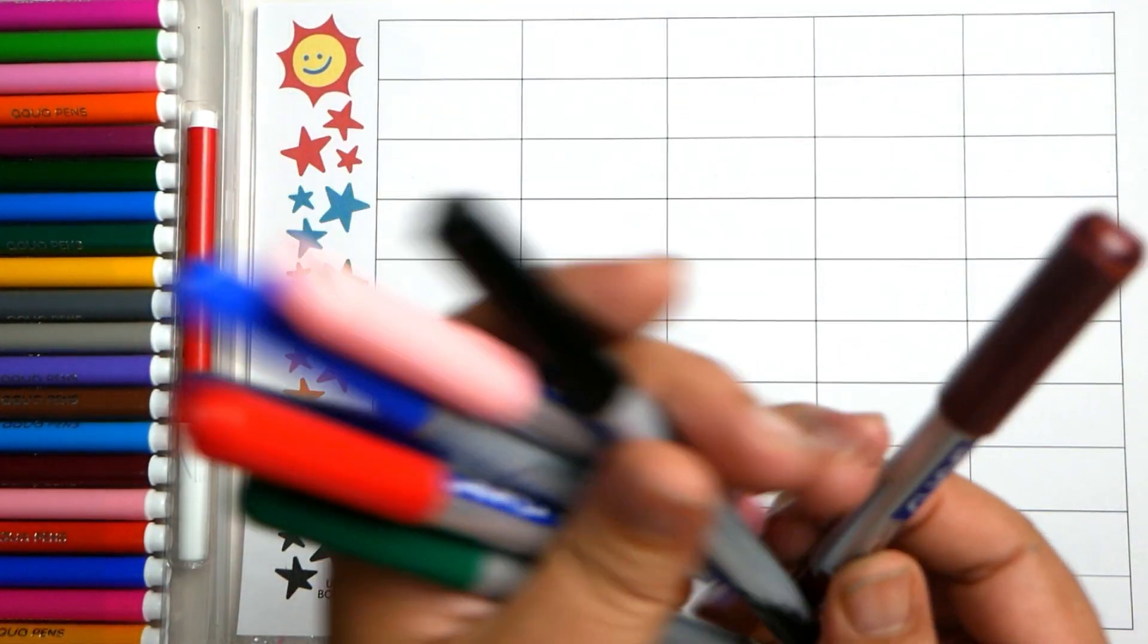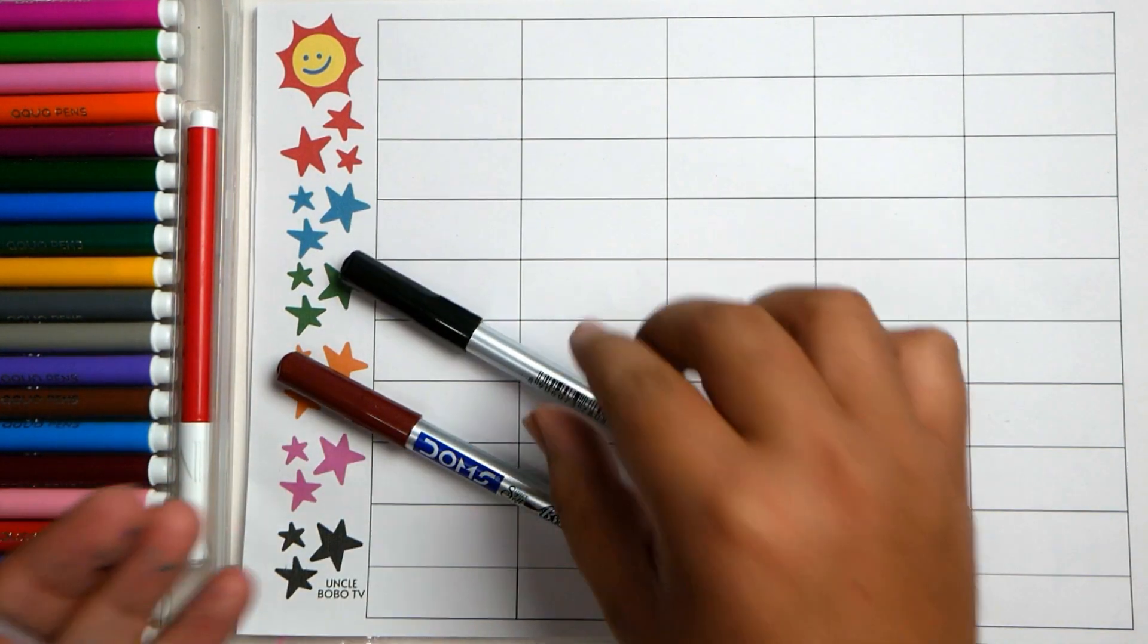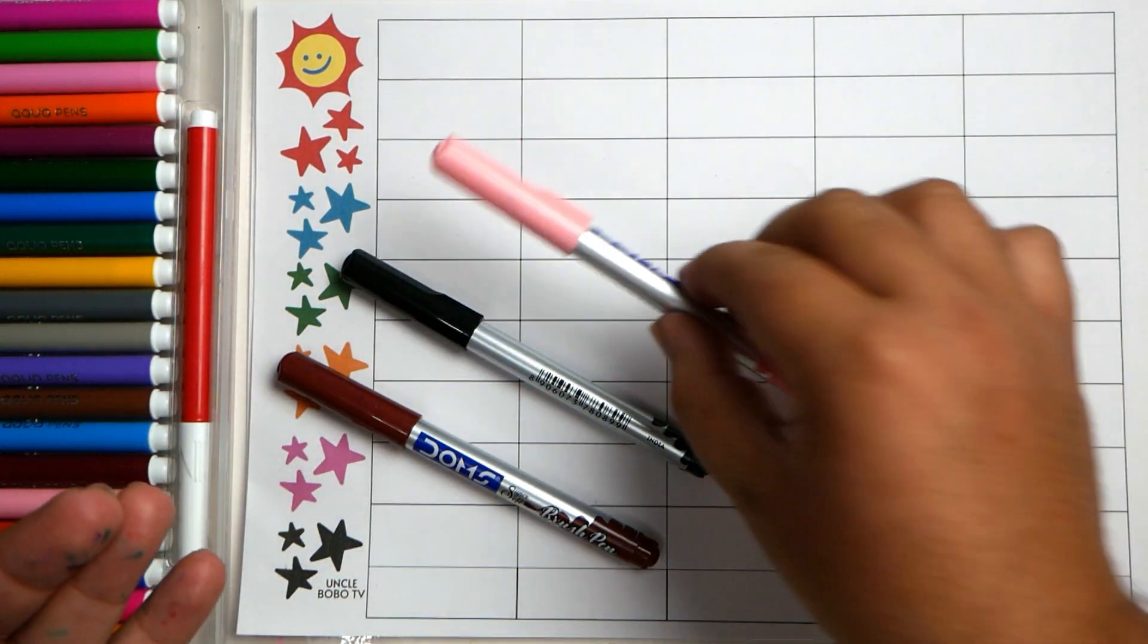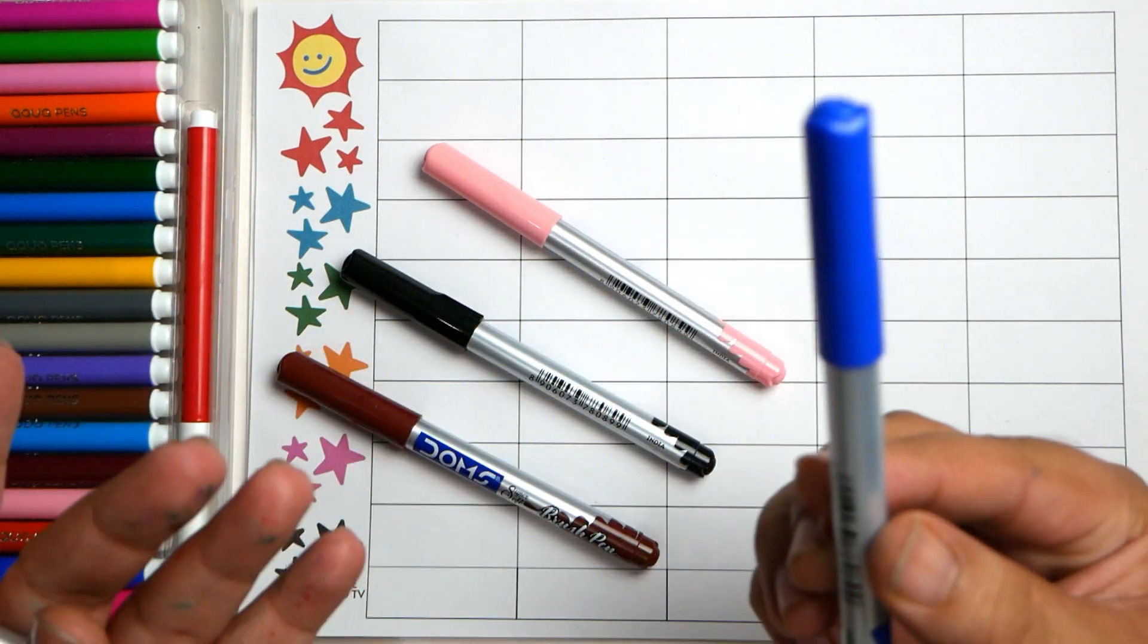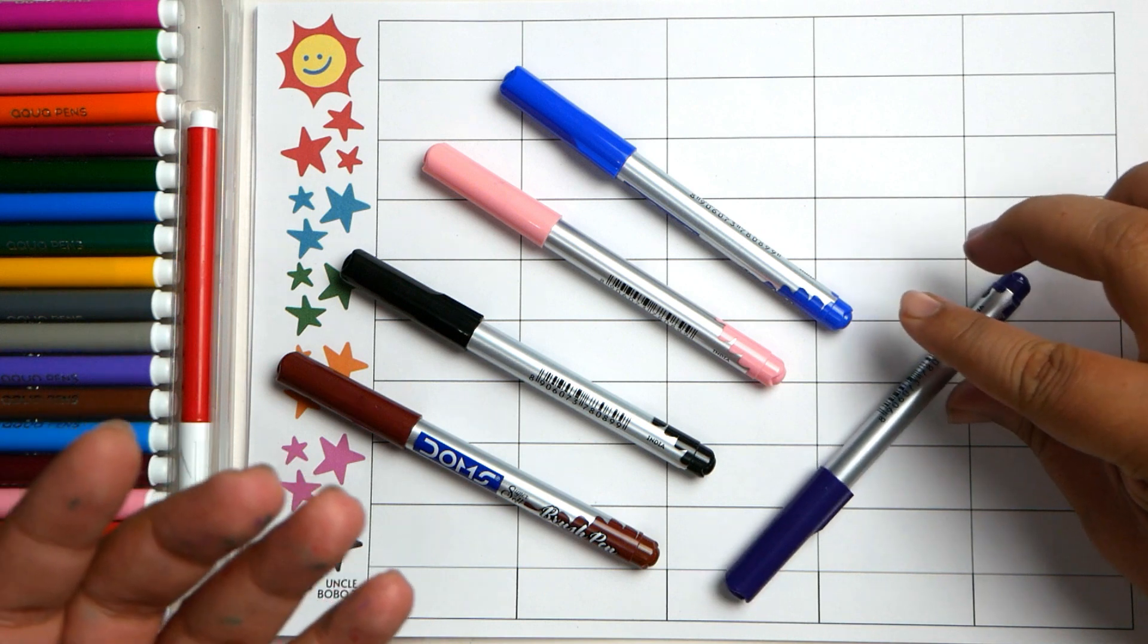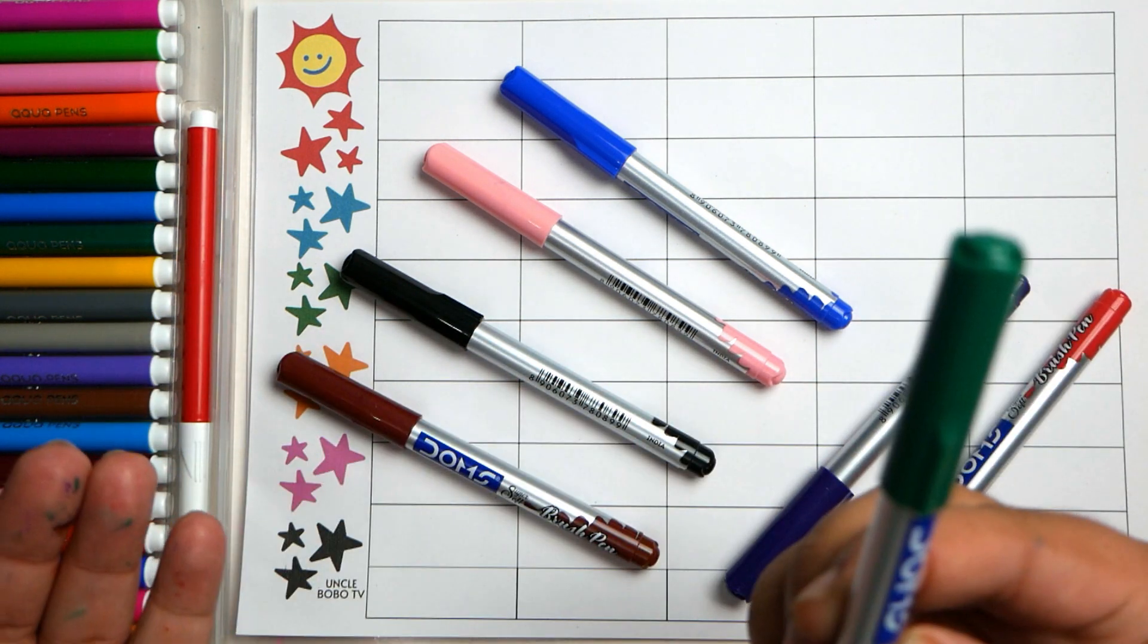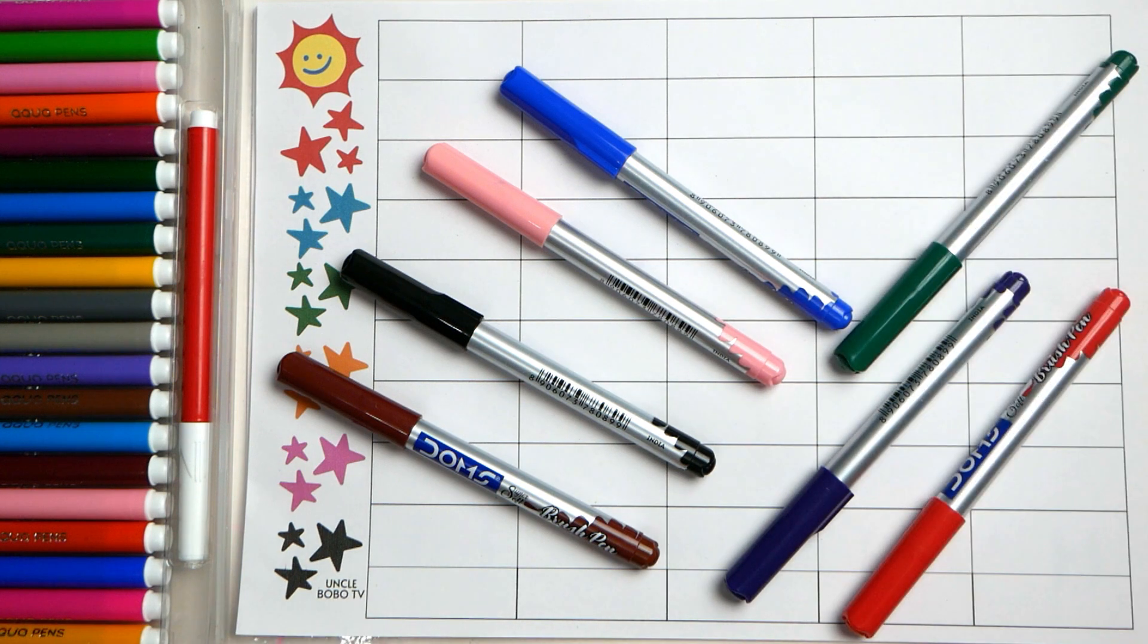So many colors! This is brown color, this is black color, this is light pink color, this is dark blue color, this is violet color, this is red color, and this is dark green color.